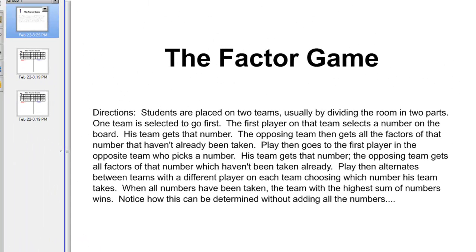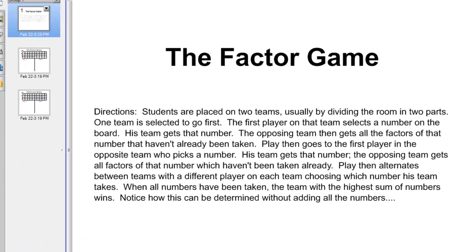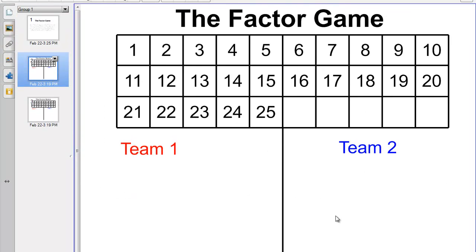Best of all, it's a game that involves some pretty good strategy. So let's try playing. Here's the game board — we have two teams, and this game board has the numbers 1 through 25 on it. Let's suppose that team 1 has been chosen to go first, and the first player decides, 'I want the most number of points. I'm going to take 25.'